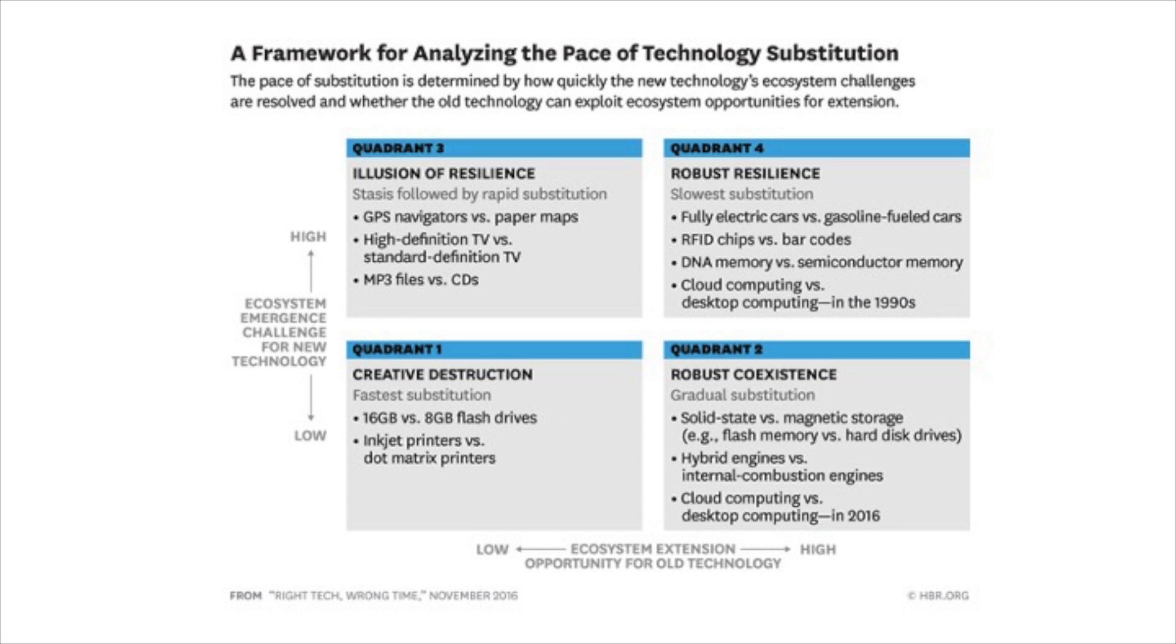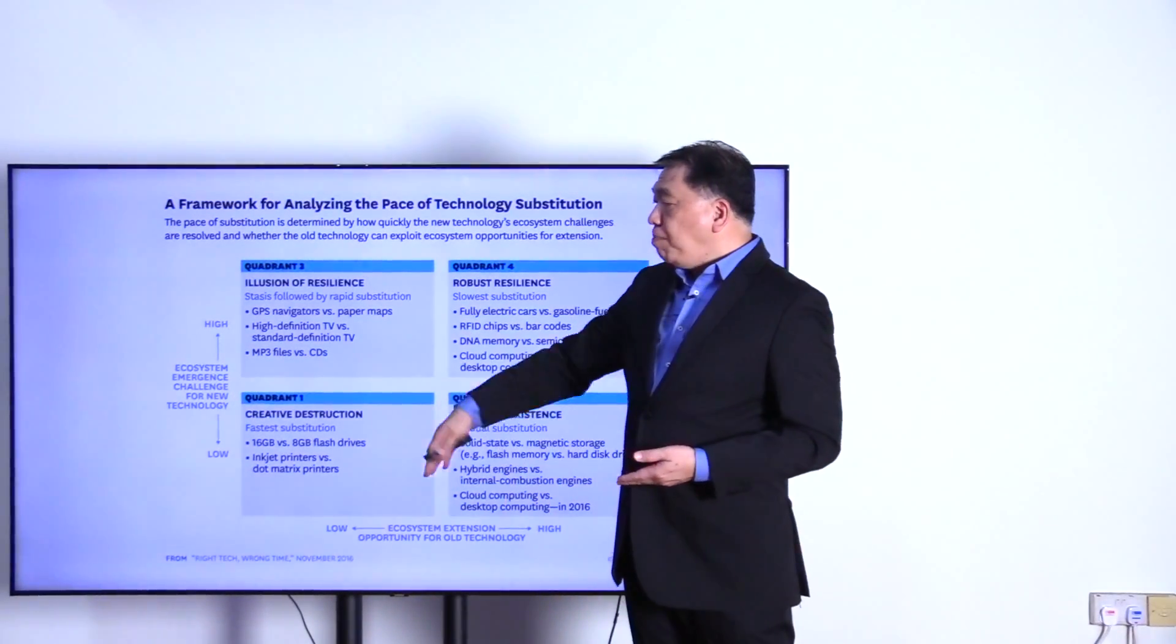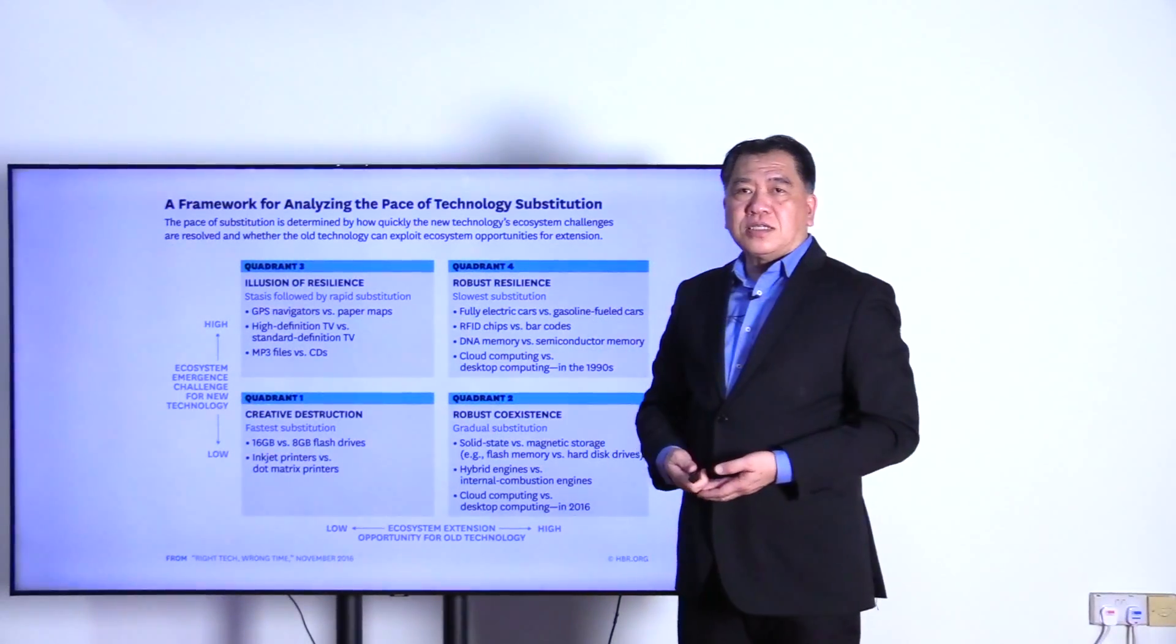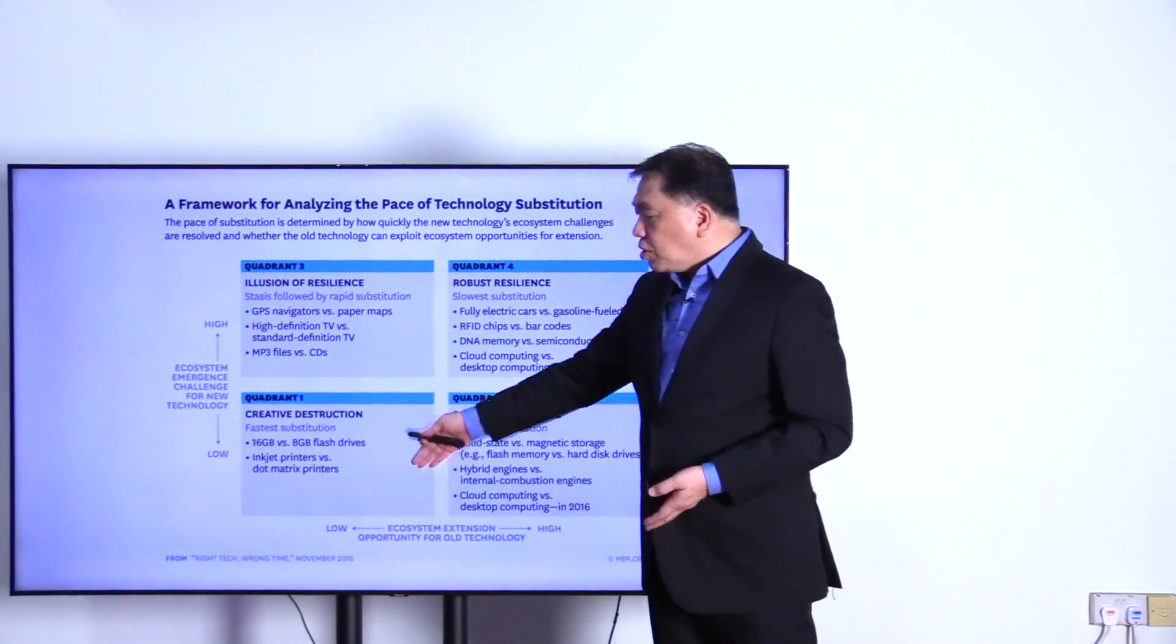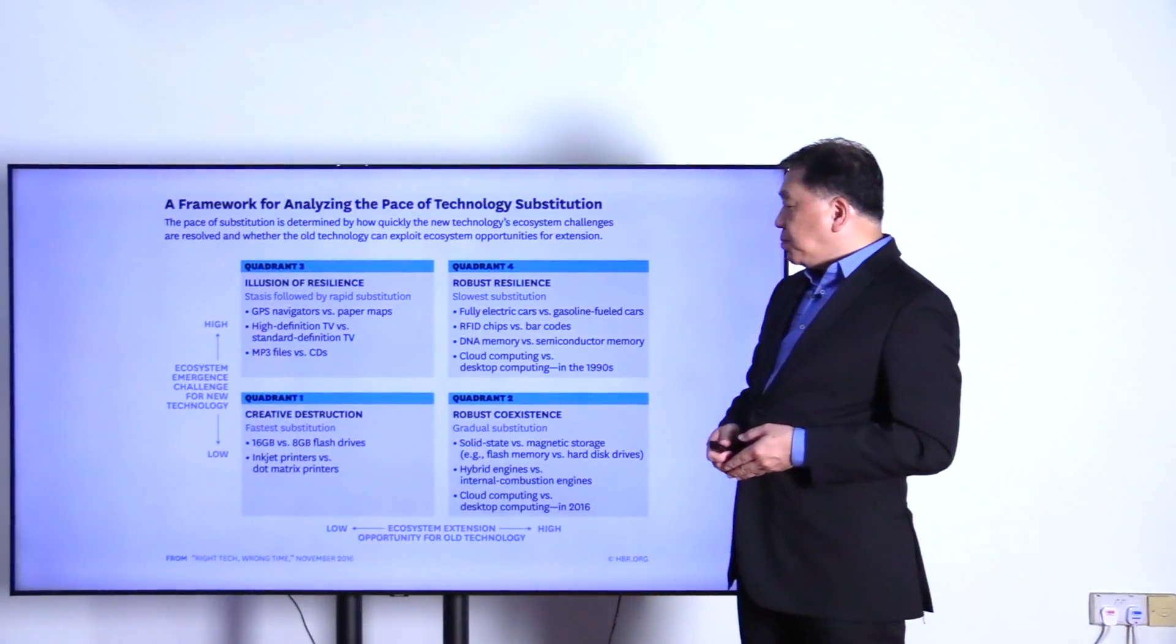This is quadrant three. GPS versus paper maps. Paper maps still exist, but eventually nobody used paper maps. High definition TV, MP3 players versus CDs. Quadrant one, there's no need for explanation because it's very fast replacement.